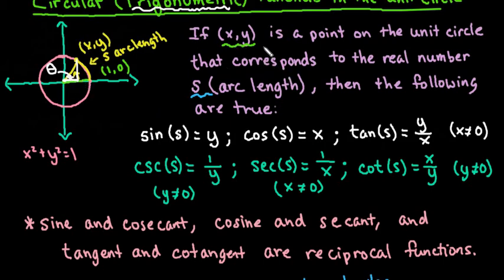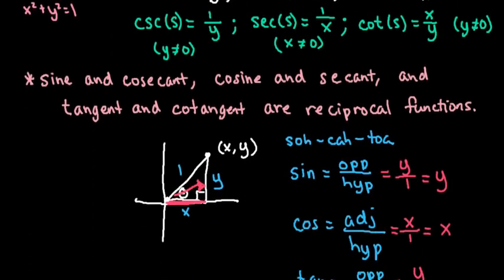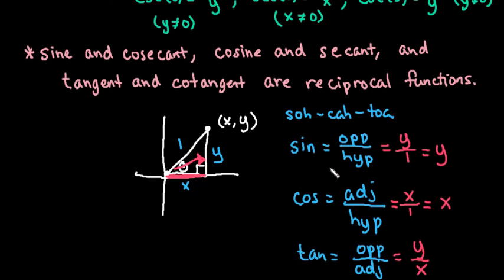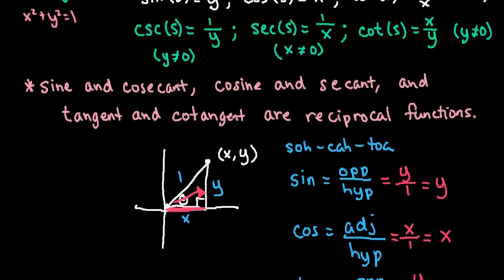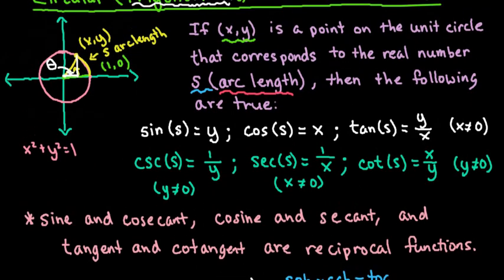So what we have is if x, y is a point on the unit circle that corresponds to a real number s, which is known as the arc length, so this is our radians, then the following are always going to be true. So this is a relationship that you want to understand. And this is the relationship that we built down here to help us see this visually, where we got the y and the x from.